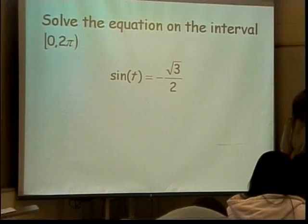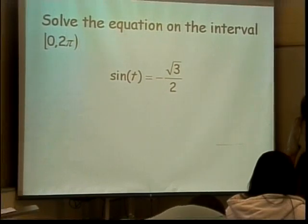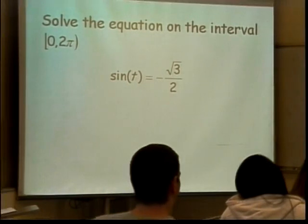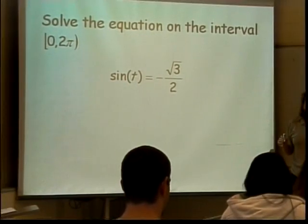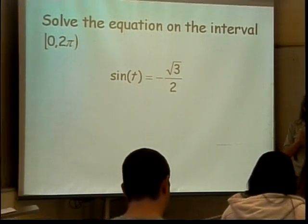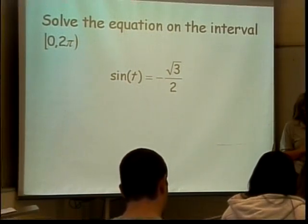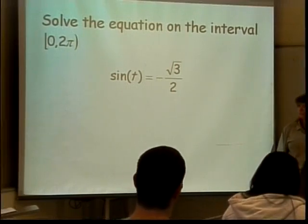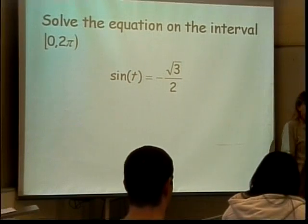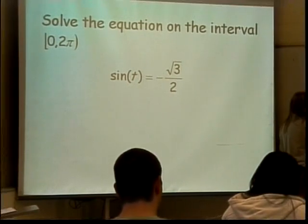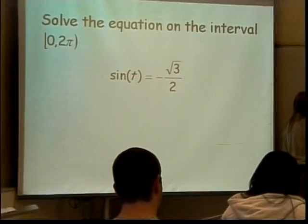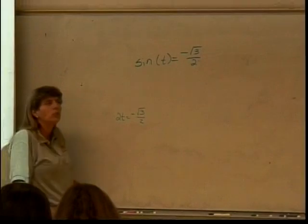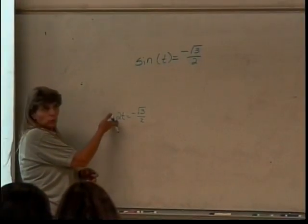So, let's call this equation sine of t is equal to the negative square root of 3 over 2. How would you suggest I solve this? If this said 2t was equal to the negative square root of 3 over 2, what would you do? Come on, guys. What would you do to solve it? You'd divide by 2. You'd do the inverse of multiplying, right? You'd divide.